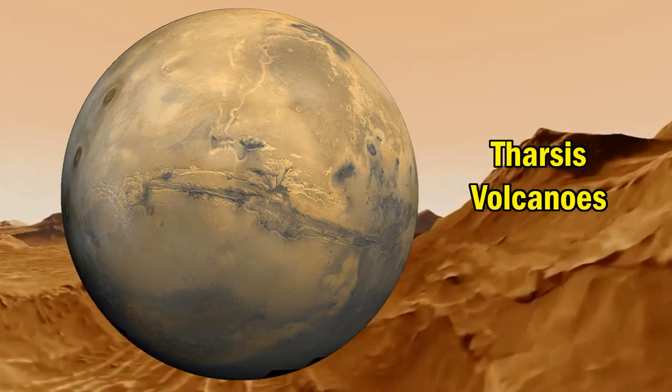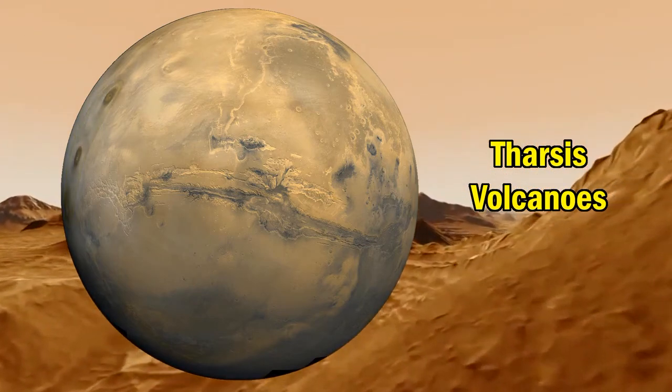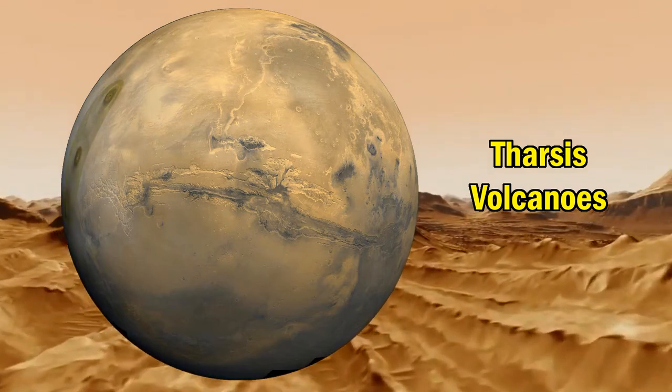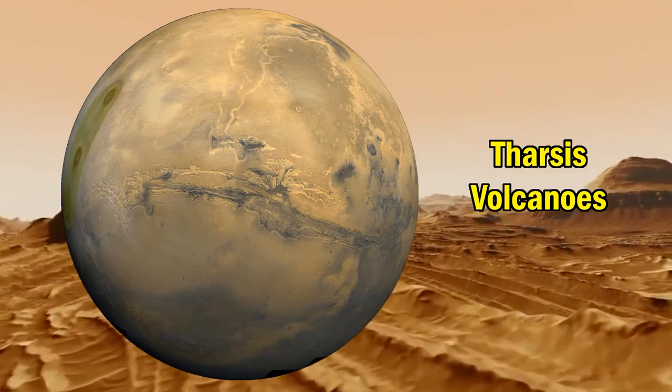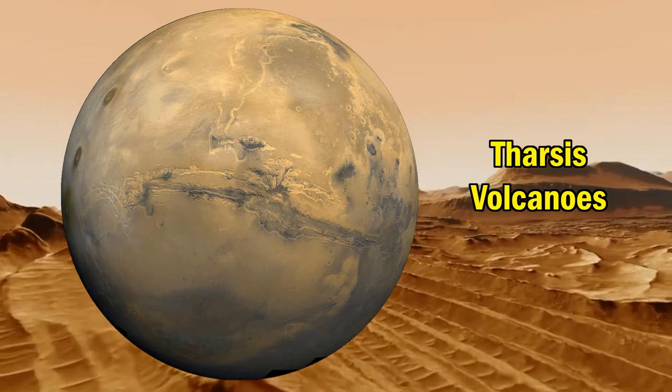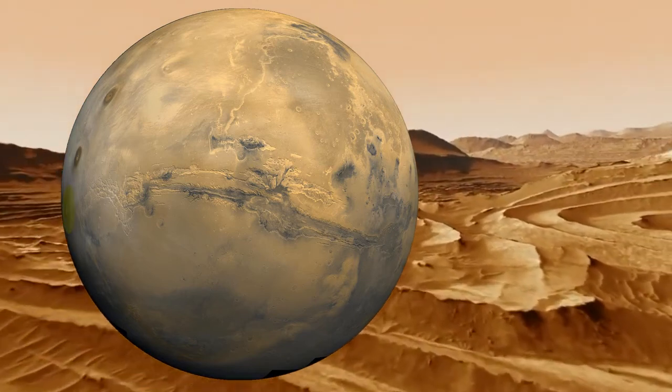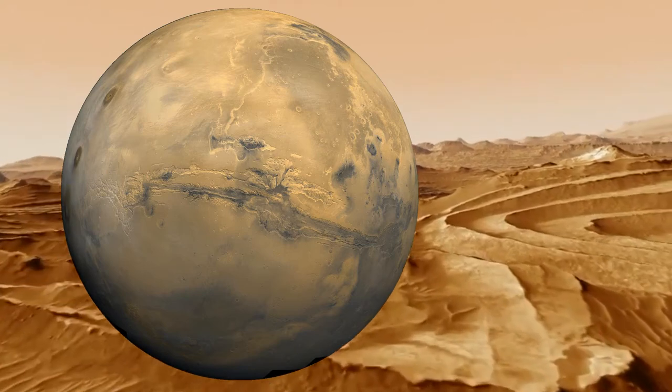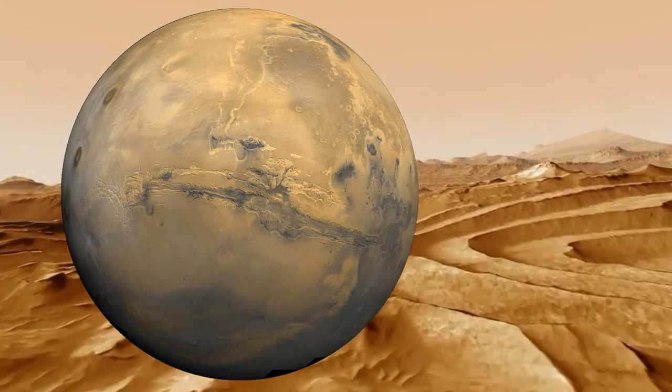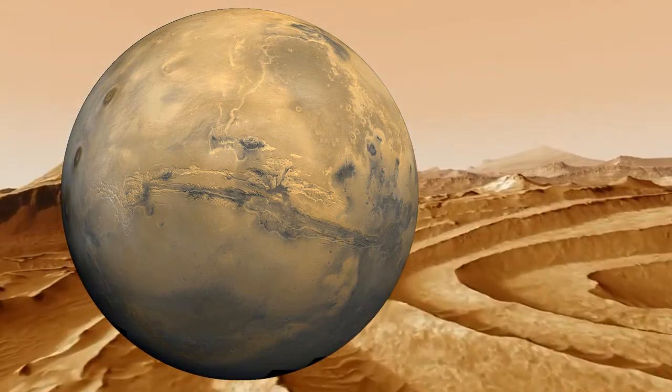As well in this image, you can see the three Tharsis volcanoes. They are the largest volcanoes in the solar system. Olympus Mons, the volcano on the bottom left, is about 600 kilometers wide and nearly 22 kilometers high.